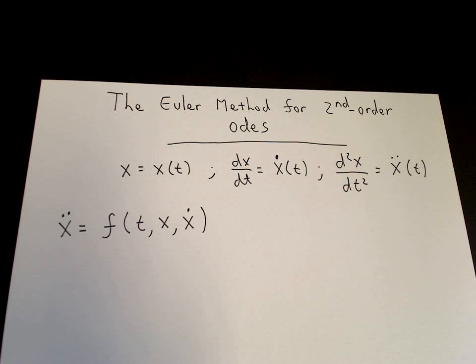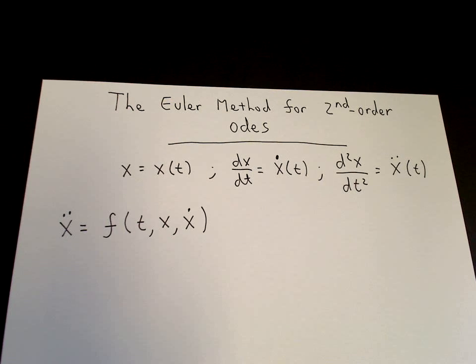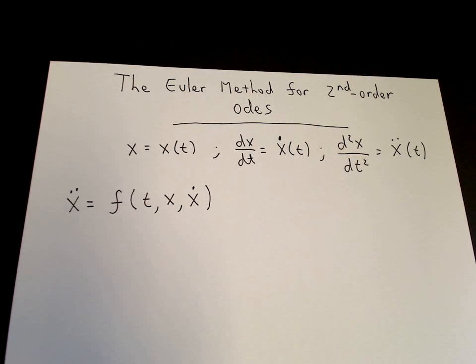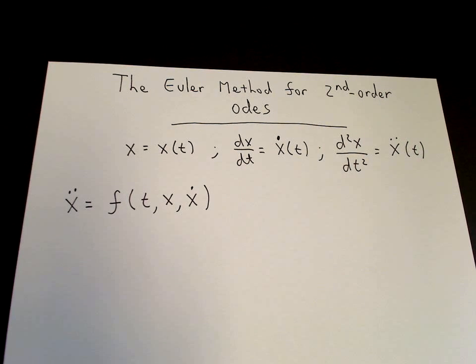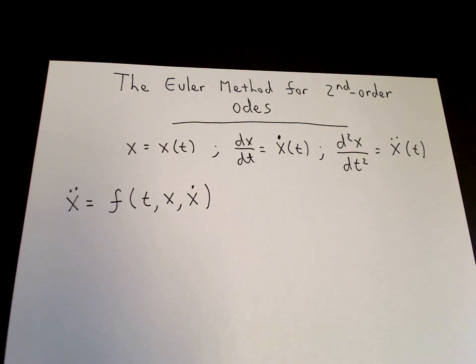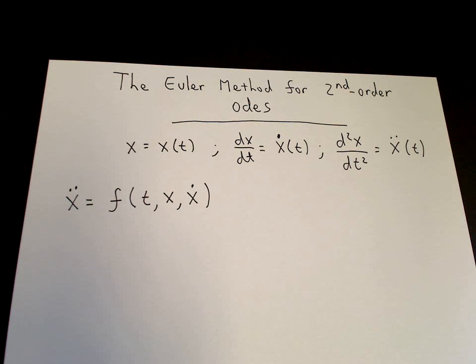So we'll use the Euler method, and we've learned the Euler method for the first-order equation, but we're going to extend it now to a system of first-order equations, a coupled system.